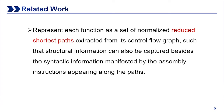In related work, we propose to represent each function as a set of normalized reduced shortest paths extracted from its control flow graph, such that structural information can also be captured besides the syntactic information manifested by the assembly instructions along the path. This allows the subsequent neural network layers to purposefully capture features that are indicative of the structural changes influenced by the obfuscation algorithm, so as to improve the overall detection performance.